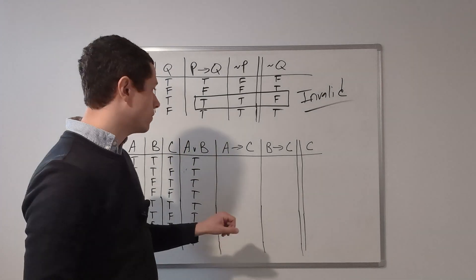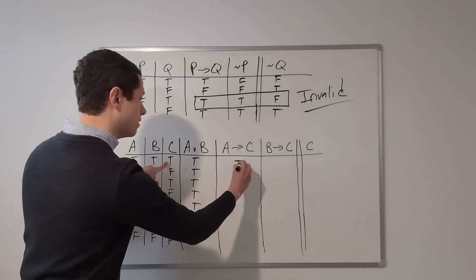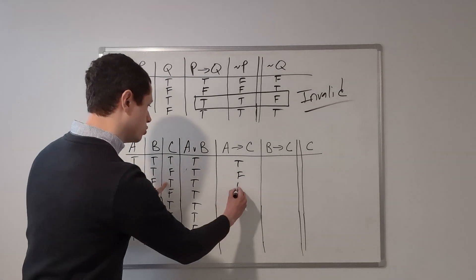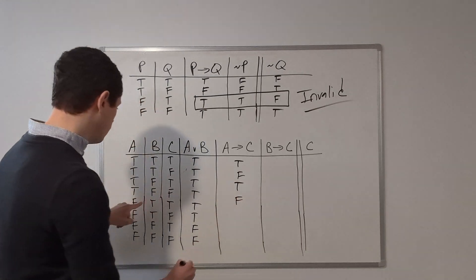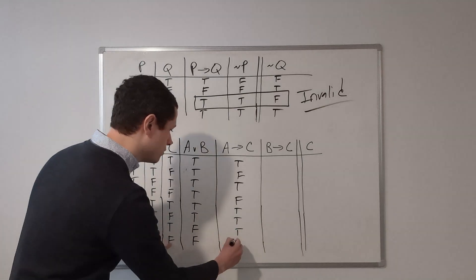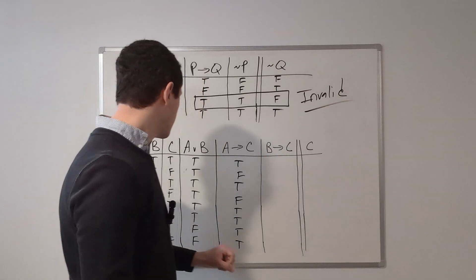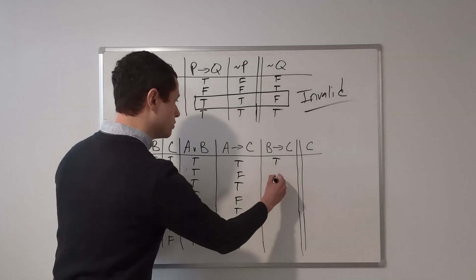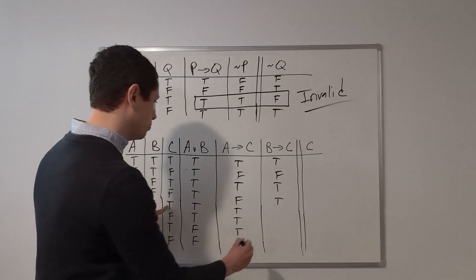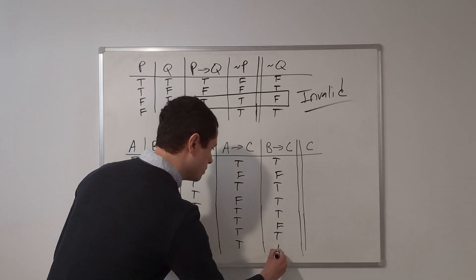Now let's calculate the next premise: if A then C. If A is true and C is true, A implies C is true. If A is true and C is false, this is false. True implies true is true; true implies false is false; false implies true is true; false implies false is true; false implies true is true; and false implies false is true. Next, B implies C: true implies true is true; true implies false is false; false implies true is true; false implies false is true; true implies true is true; true implies false is false; false implies true is true; and false implies false is true.